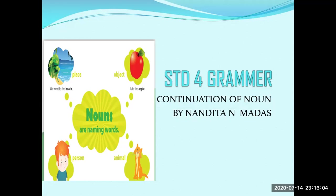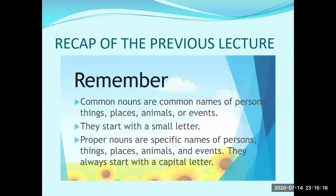Students, in the last lecture you had learned about noun and its kinds — that is common noun and proper noun. Common nouns are the common name of a person, things, places, animals or events, and they start with a small letter. Whereas proper nouns are specific names given to a person, things, places, animals and events, and they always start with a capital letter wherever they appear in the sentence.